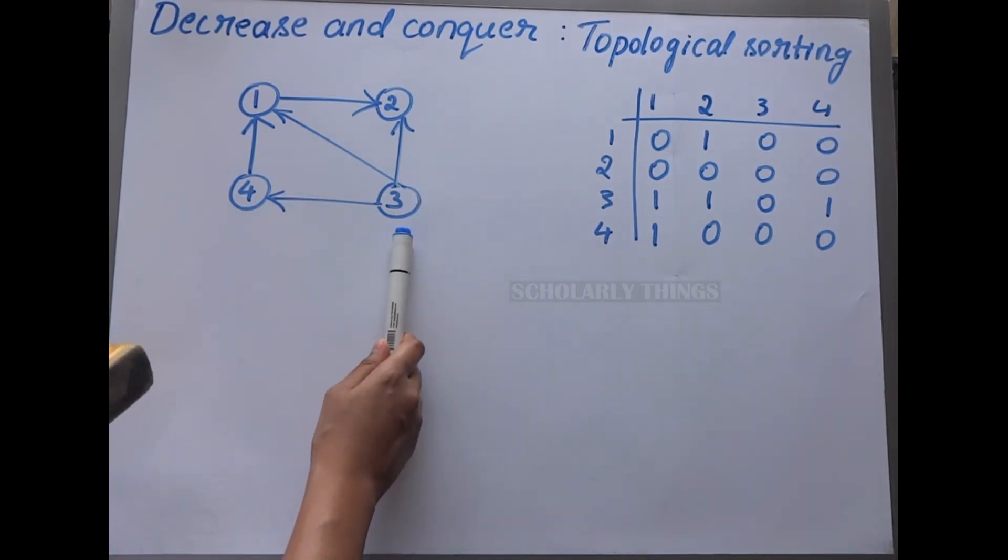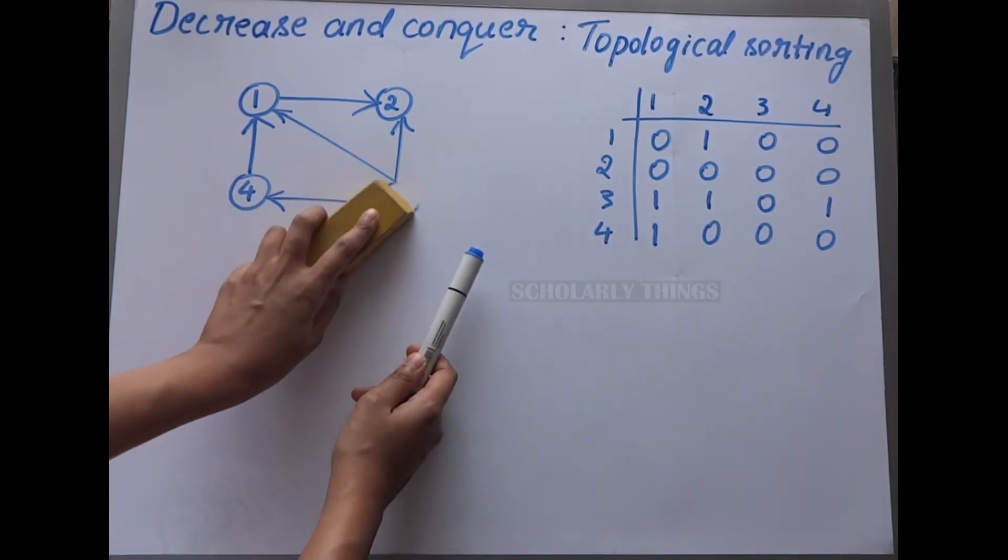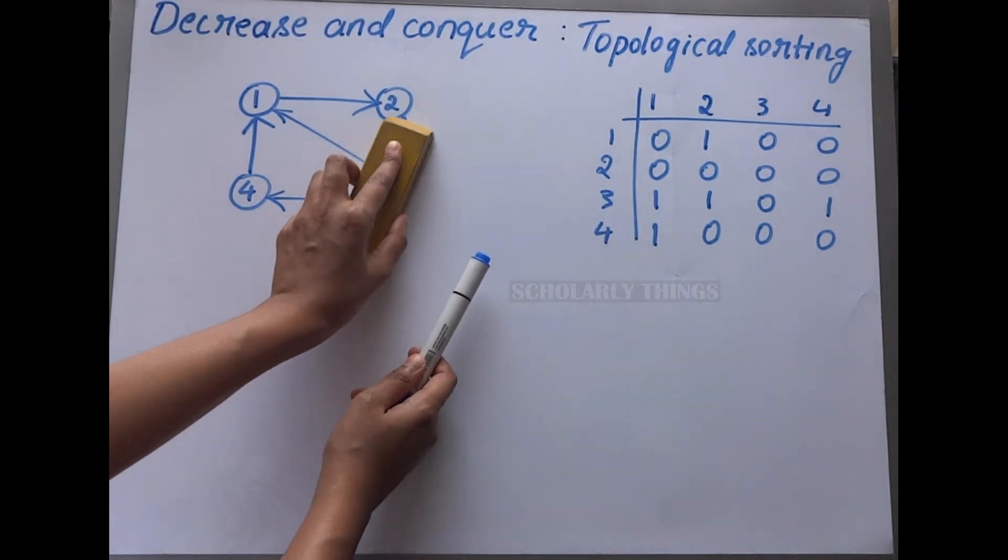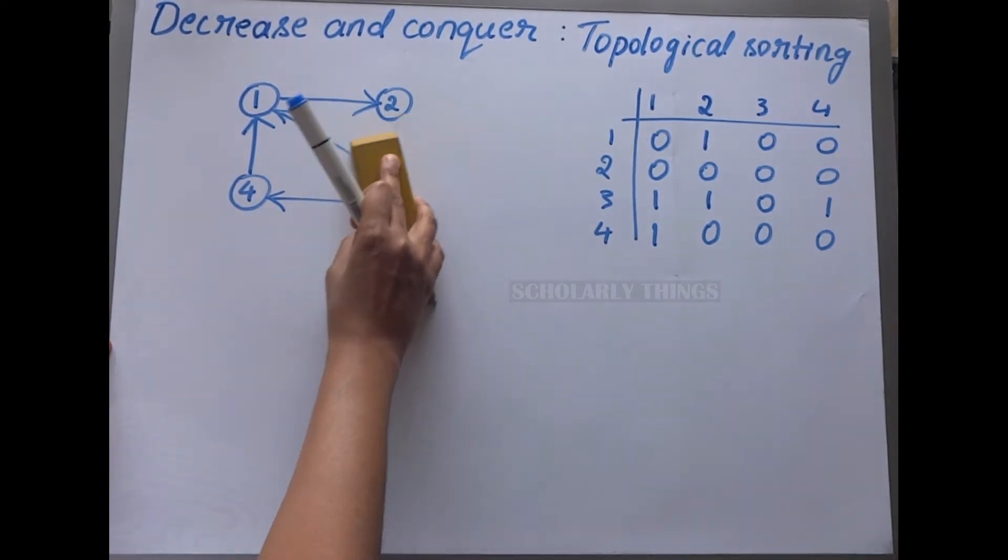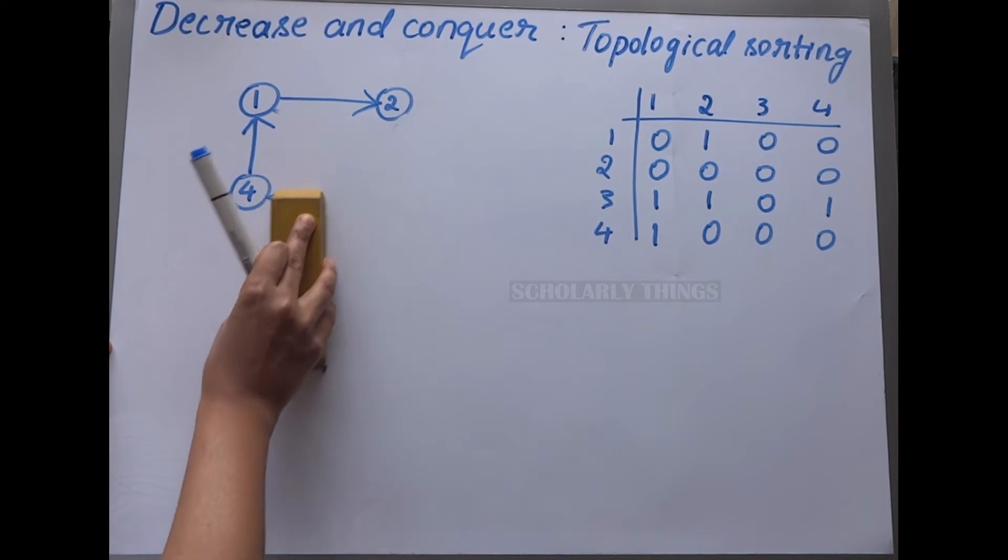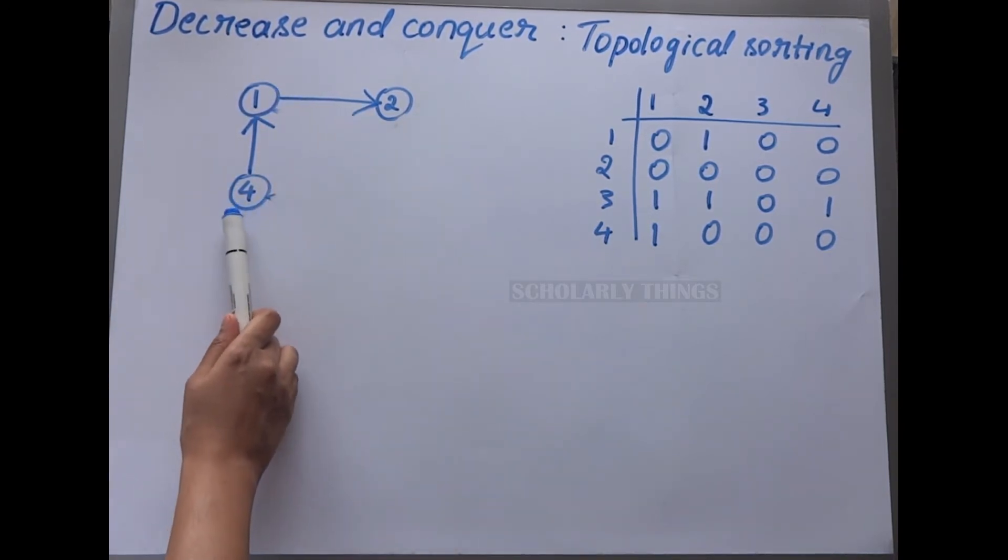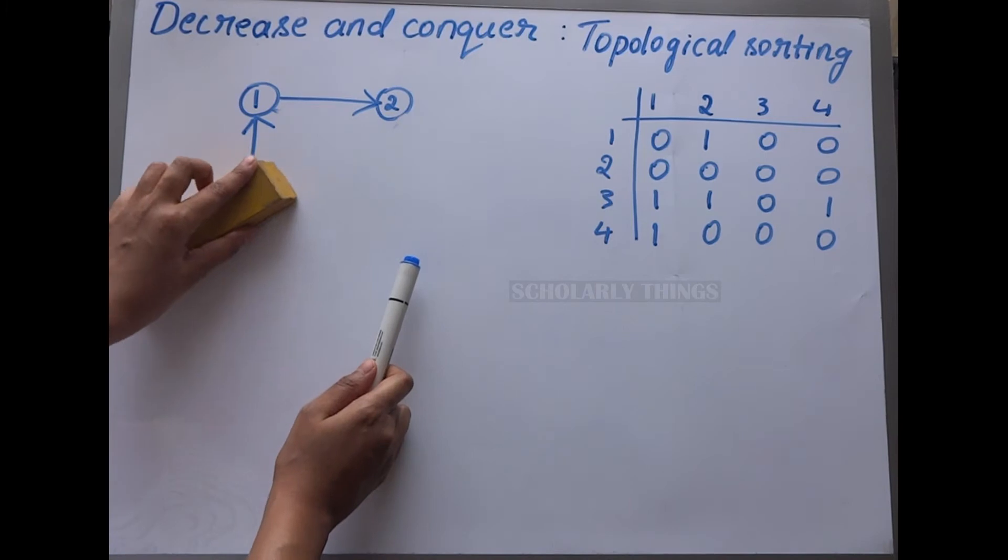The order in which the nodes are deleted is the topological sequence. In this example, 3 does not have any indegrees, so delete 3 and all its outgoing edges. Next, 4 does not have any indegrees, so delete 4 and its outgoing edge.